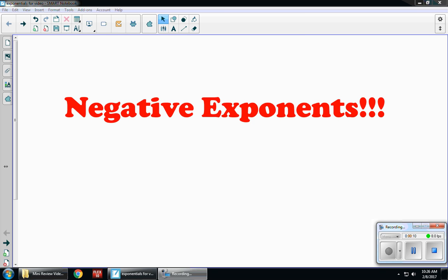If I have something like x to the negative 2 power, in order to make my negative exponent positive, I'm going to bring it to the denominator or form the reciprocal. So this is equal to 1 over x squared.